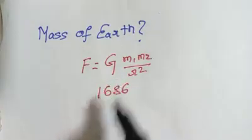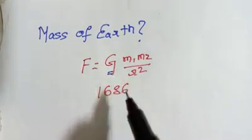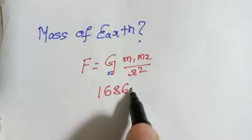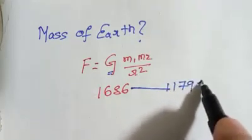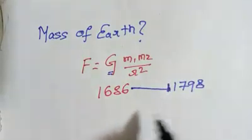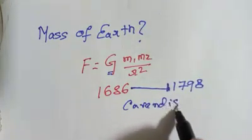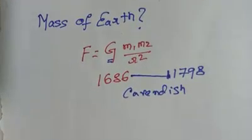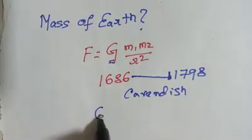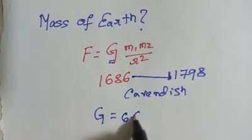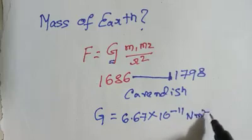But during that time, Isaac Newton didn't have the sensitive instrument through which he could calculate the value of G. From 1686, it took a long time until 1798, when a British mathematician, Henry Cavendish, finally calculated the value of G — the universal gravitational constant — at 6.67 multiplied by 10 to the power minus 11 Newton meter squared per kilogram squared.